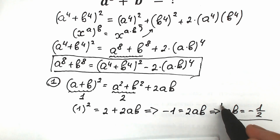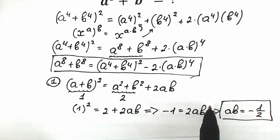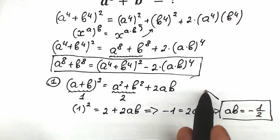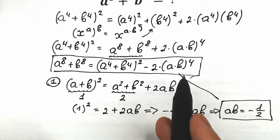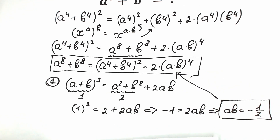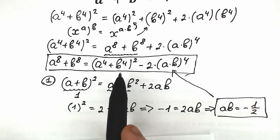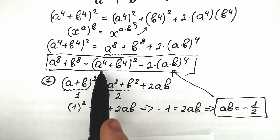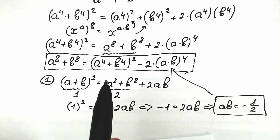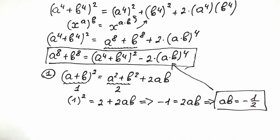This is really great — we found a times b equals minus one half. That's our first step done. Now for the second part, we need to find a to the 4th plus b to the 4th. Then we plug that into our expression and we have our answer.